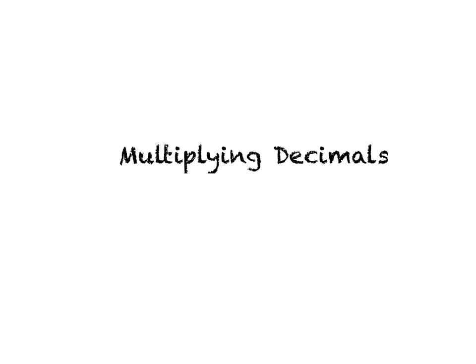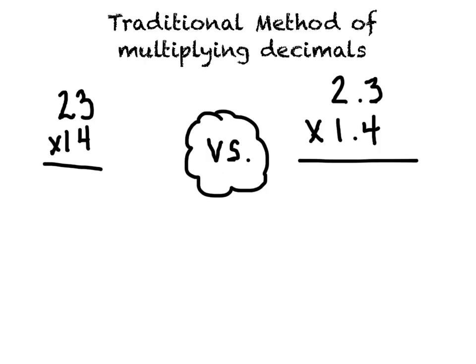Today we will be watching a video on multiplying decimals. When we're multiplying decimals, it's a lot like multiplying whole numbers. So what I'm going to do is first show you how to multiply 23 times 14, and then we're going to put some decimals in that same problem and show you how it's going to look a little bit different.